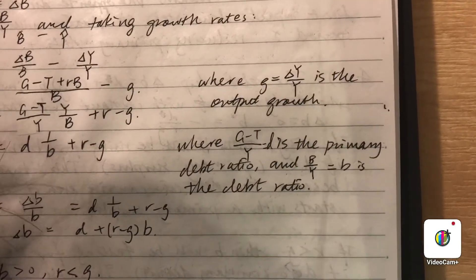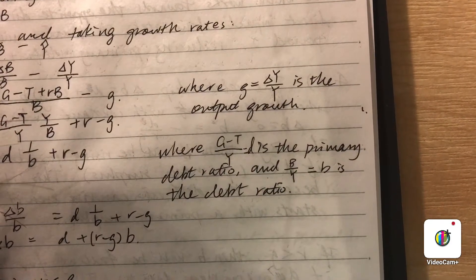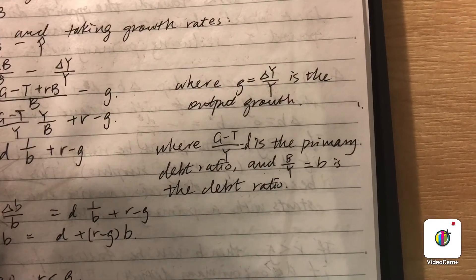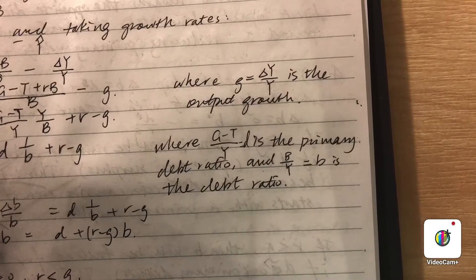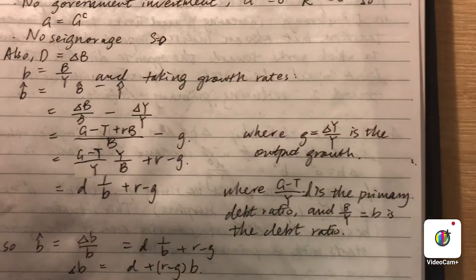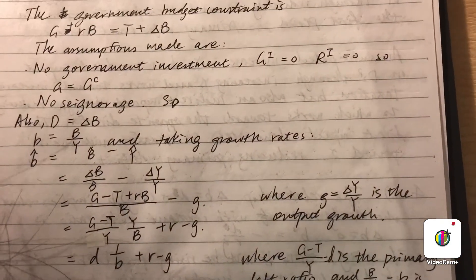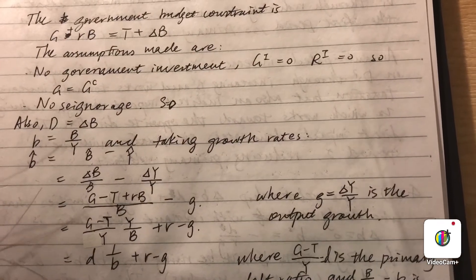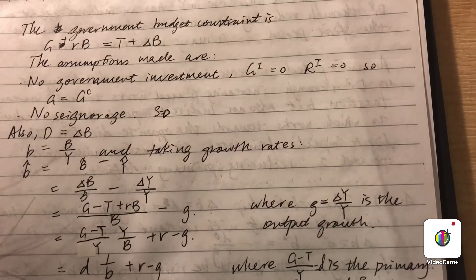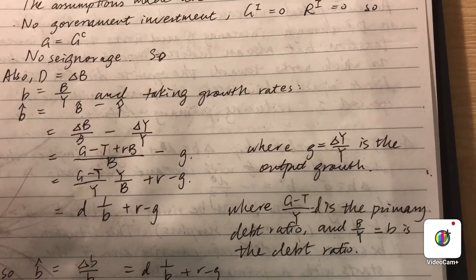So the assumptions we've made to simplify the budget constraint is that there's no government investment, so there's no investment return. And also, G is only composed of government purchase. And also there's no seigniorage.